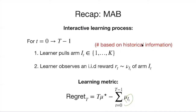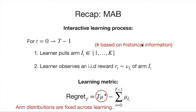One algorithm, the UCB algorithm, is optimal in the sense that it achieves the optimal regret of square root T. This model is very classic — many computer scientists and mathematicians study it because it's simple and has good practical usage. But the downside is that across all days, these action distributions are fixed. The best action is fixed every day, so nothing is changing. This is one of the limitations.